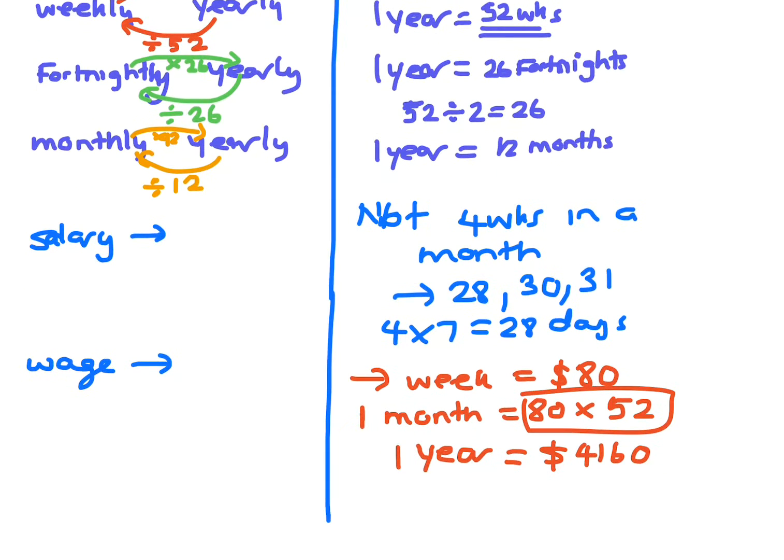And that's for one year. 80 isn't very much for a week. And then if you want to get for one month, you get $4,160 and divide it by 12, because there are 12 months in a year. So you divide it by 12 to get how much for one month. So one month would be $346.66.